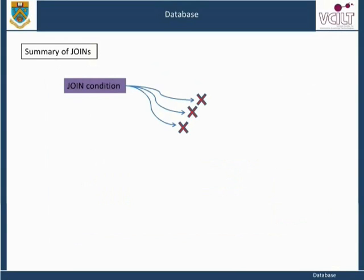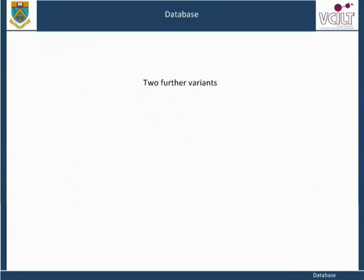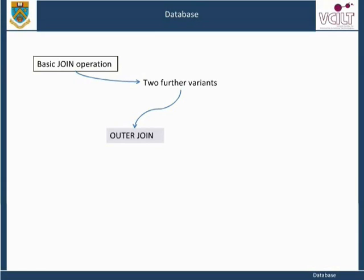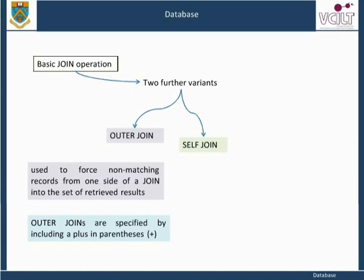We have seen three forms of the join condition. The basic join is used to combine or coordinate the results of a query in a logical way across more than one table. A lot of work has gone into the development of efficient algorithms for the execution of joins in all the major database systems, with the result that the overall performance of relational database systems has seen a very considerable improvement since their introduction in the early 1980s. In spite of this, joins are still an expensive operation in terms of query processing, and there can be situations where we seek ways of reducing the number of joins required to perform specific transactions. Two further variants we have seen on the basic join operation are the outer join and the self-join. The outer join is used to force non-matching records from one side of a join into the set of retrieved results. Outer joins are specified by including a plus in parentheses.